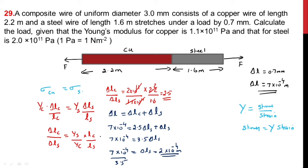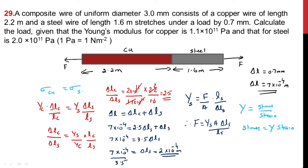We have now found the extension in the steel. The question asks for the load. Using Young's modulus of steel: Ys = (F / A) × (Ls / δLs), so F = Ys × A × δLs / Ls. Substituting: Ys = 2×10¹¹, area = πR², and δLs = 2×10⁻⁴.